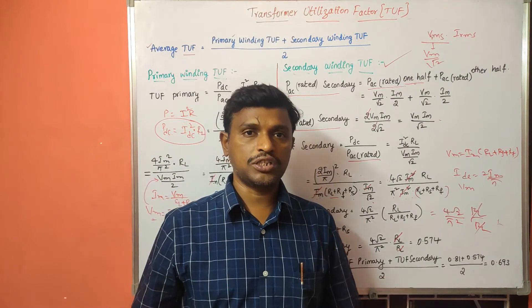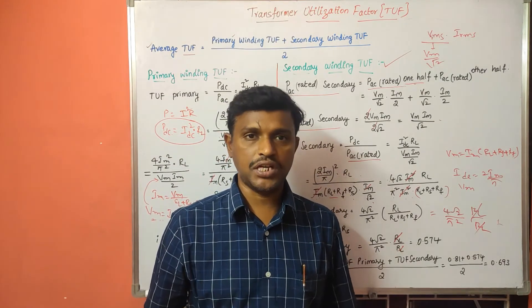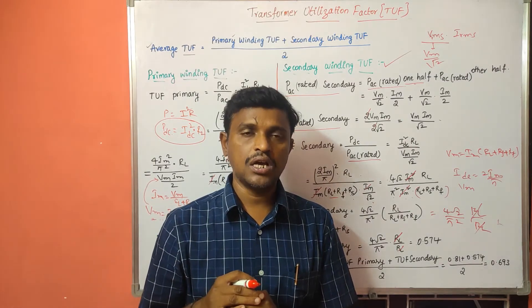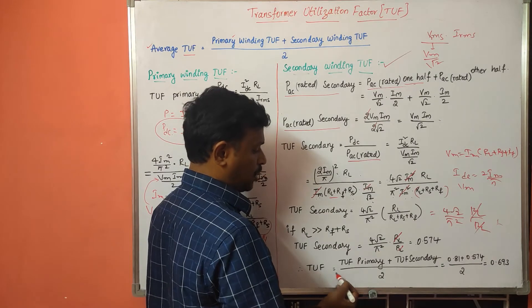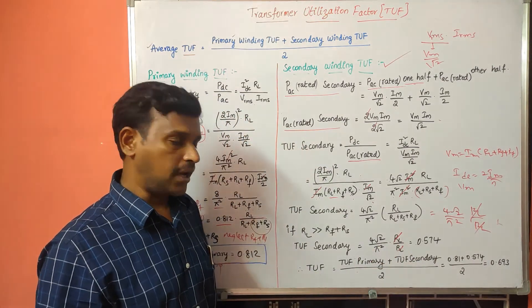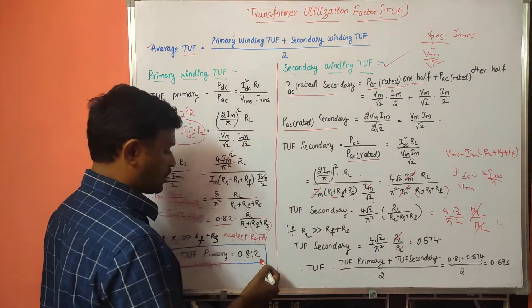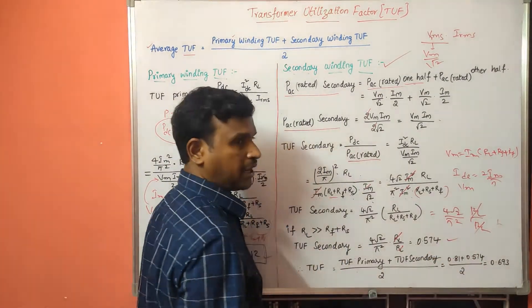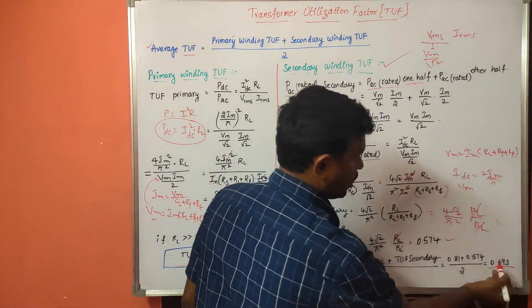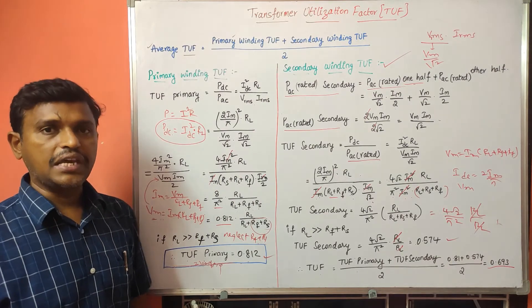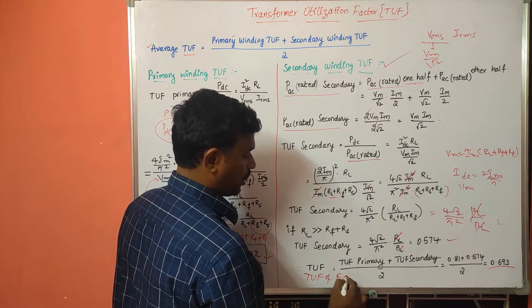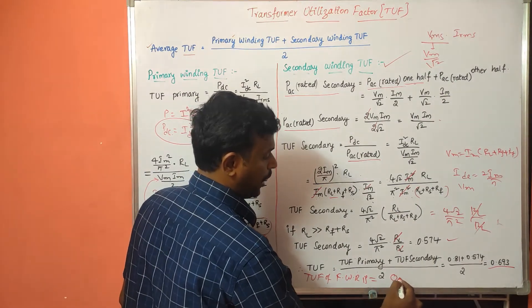The transformer utilization factor for the full wave rectifier is the average transformer utilization factor, equal to primary winding TUF plus secondary winding TUF divided by 2. Primary winding TUF is 0.812 and secondary winding TUF is 0.574. So it is (0.812 + 0.574) / 2. The transformer utilization factor for the full wave rectifier is 0.693.